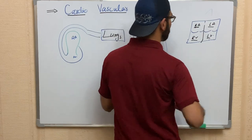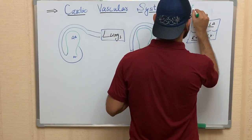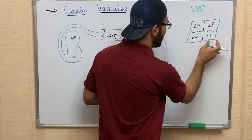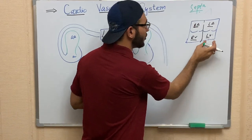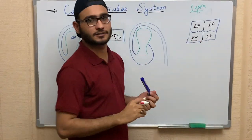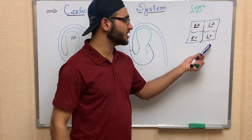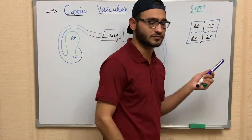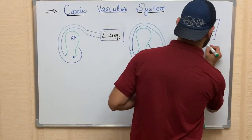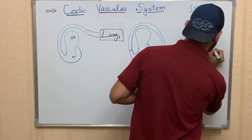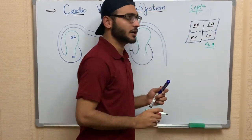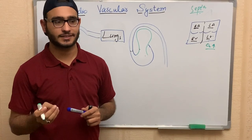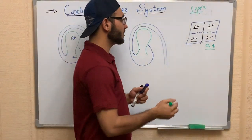The left side of the heart contains oxygenated blood, meaning it has a high concentration of oxygen. The right side of the heart contains deoxygenated blood, meaning it has a high concentration of carbon dioxide.